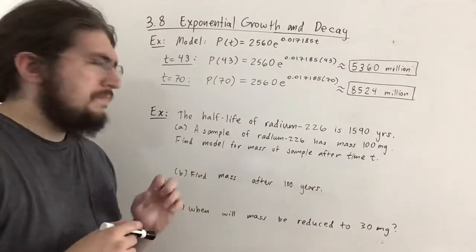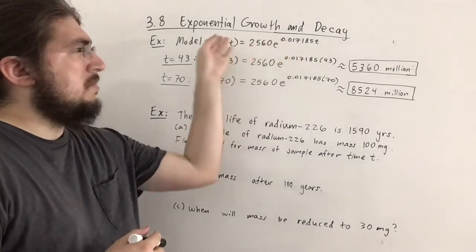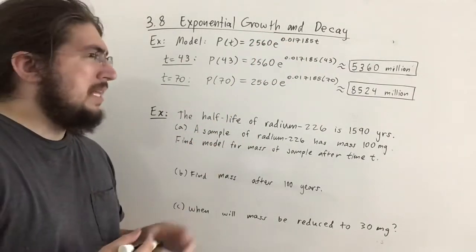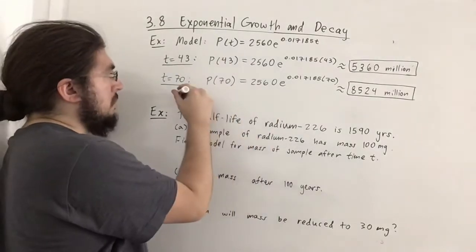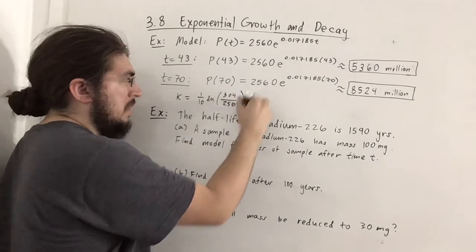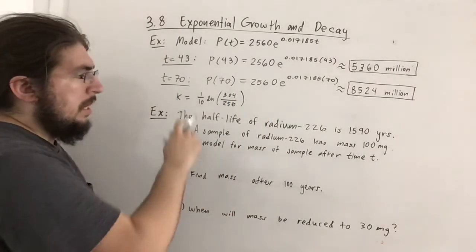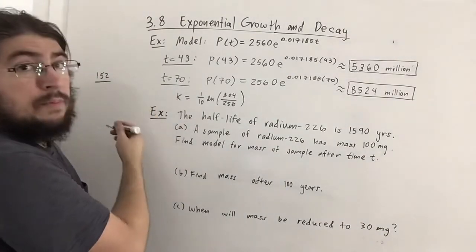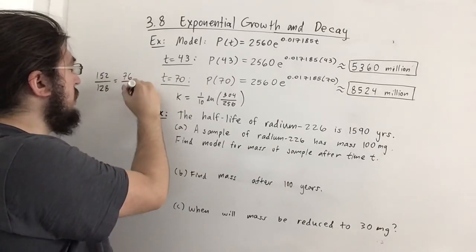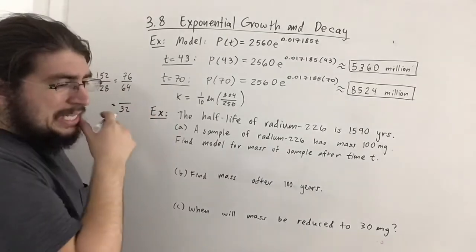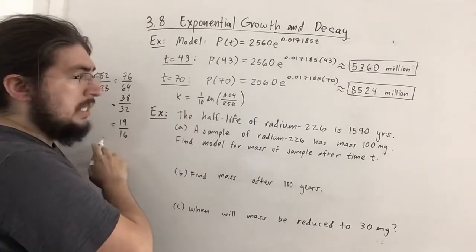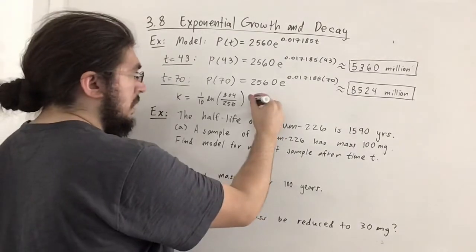There's actually a way to write this model more precisely. We approximated k, but recall k = (1/10)·ln(304/256). Let's reduce: 304/256 → 152/128 → 76/64 → 38/32 → 19/16. So k = (1/10)·ln(19/16). It's surprising that it reduces that much to 19/16.